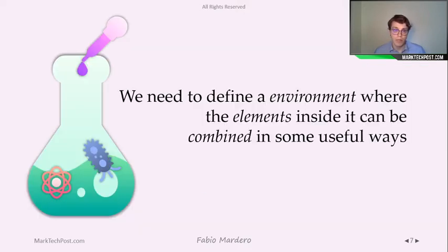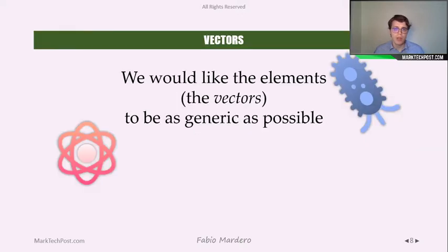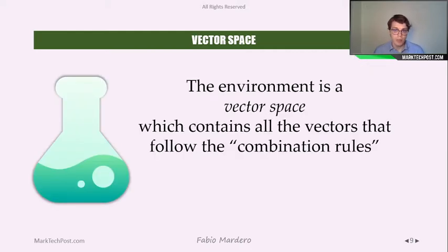Our goal is to define an environmental space where all the elements inside it can be combined in some useful ways. We will define those elements as vectors, and we want these vectors to be as generic as possible, so that with one definition we can comprehend very different types of elements. This environment will be called a vector space — the set of all vectors that follow some combination rules.